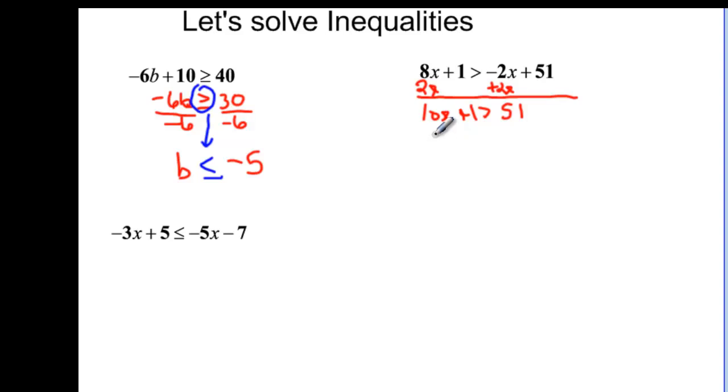So now I have 10x plus 1 greater than 51. And if I subtract my 1, 10x is going to be greater than 50 and I'm dividing by a positive number so x is going to be greater than 5.